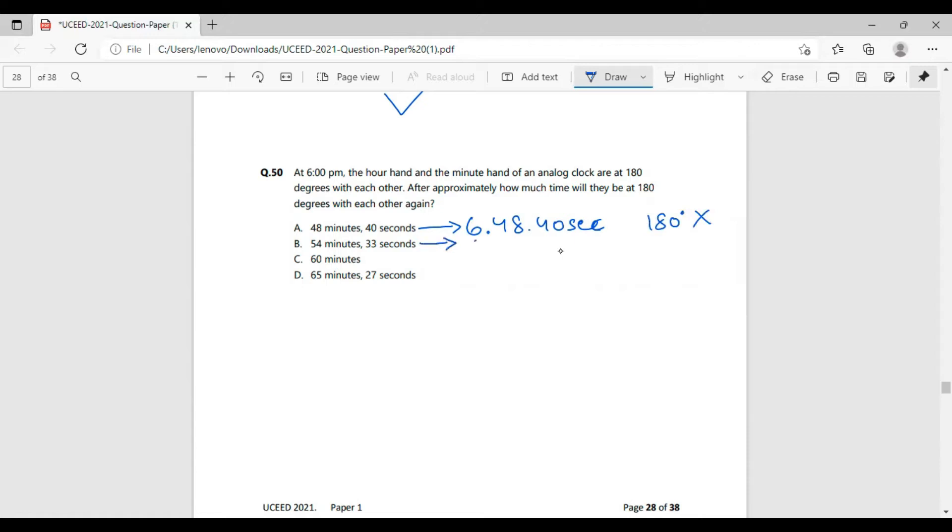At 6:54, which is 54 minutes and 33 seconds after 6 o'clock, that means 6:54 and 33 seconds. Again, this is also not 180 degrees. Talking about 60 minutes, this would be 7 o'clock exact. This is also not 180 degrees.